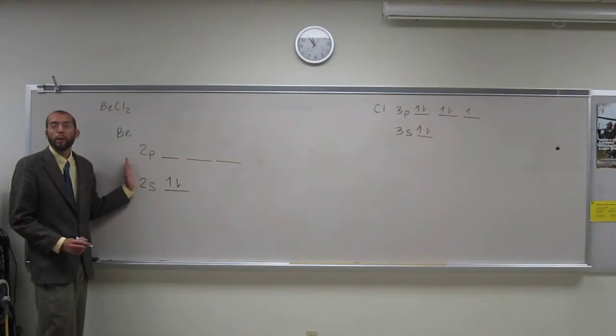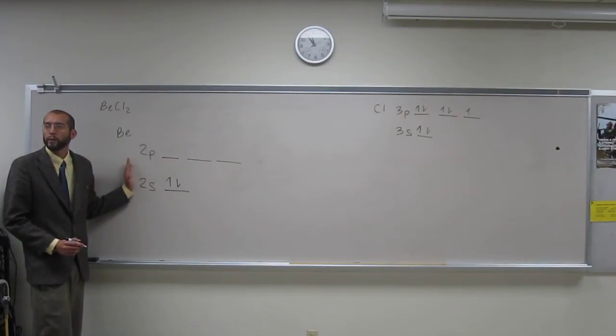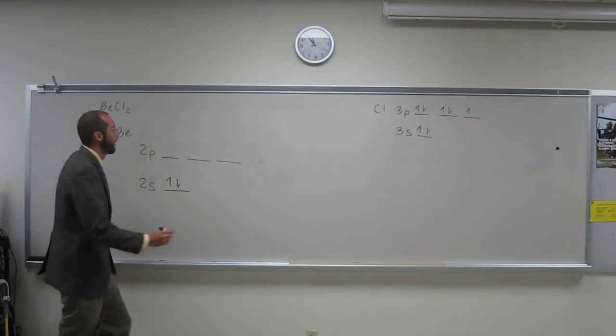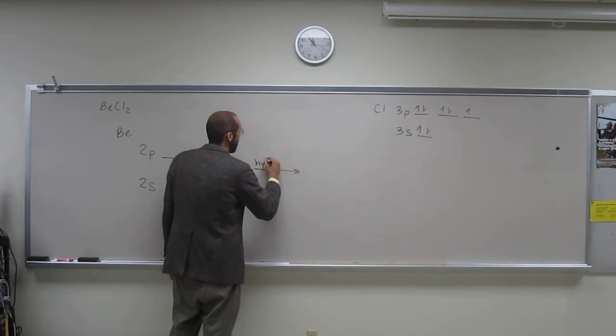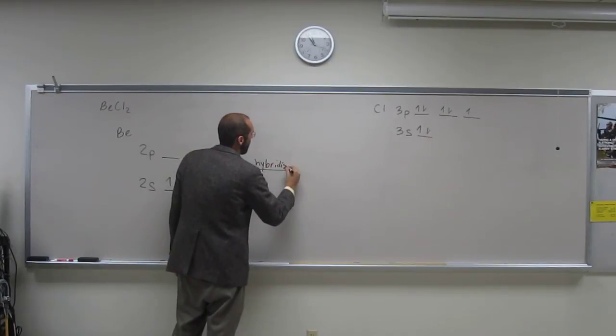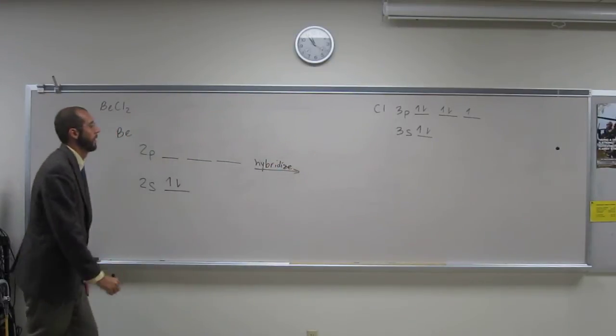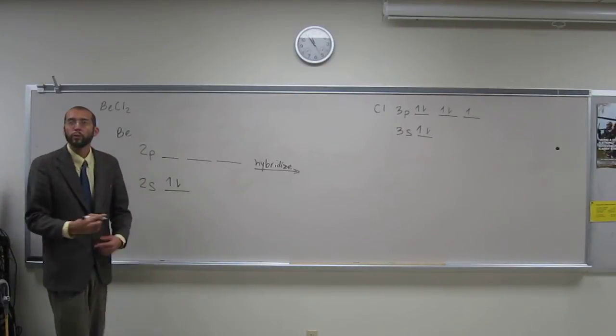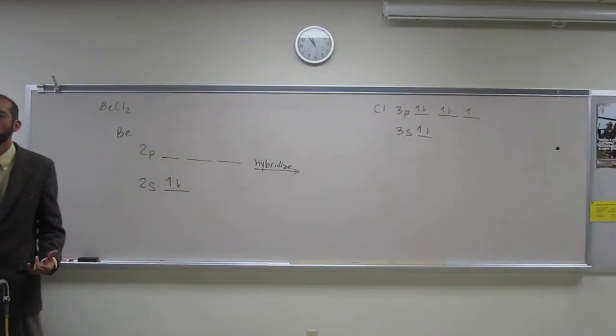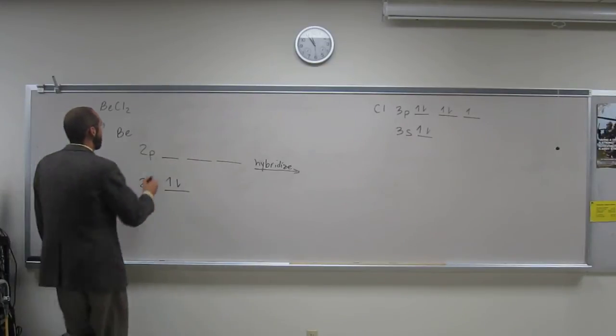So beryllium, in order to make two bonds, needs to have two half-filled orbitals. Is everybody okay with what I'm saying? So what it does is it hybridizes those orbitals. How many orbitals will it hybridize? How about that? Two. Two, right? Because it needs to make two bonds.